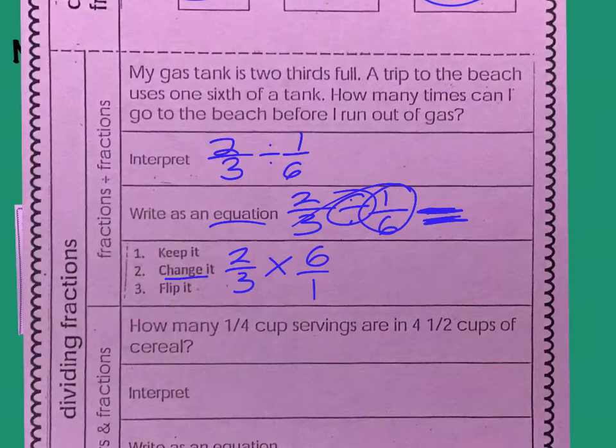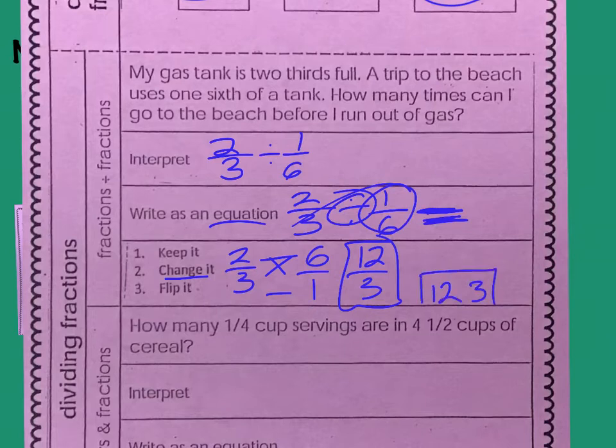So, I'm just going to multiply. 2 times 6 is 12. 3 times 1 is 3. And now, I'm going to simplify this. Another way of looking at 12 over 3 is 12 divided by 3. So, if I take 12, let's do it the way that I think is the most helpful to you. So, I'm going to go like this. 12 and 3. And what number can I pull out? A 3. And what's left on top is 4 and 1. So, if I wrote that as a fraction, it would be 4 over 1 or 4, not 1. So, you could go to the beach 4 times before you ran out of gas if you had 2 thirds of a tank and it takes 1 sixth of a tank to get to the beach. So, kind of cool.